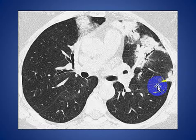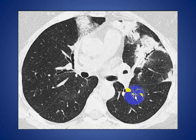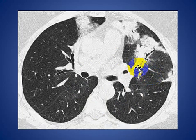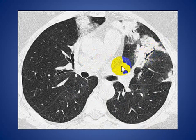Here is another patient with an axial high-resolution CT scan showing bilateral peripheral and peribronchovascular consolidation in the lower lobes. This patient has cryptogenic organizing pneumonia.